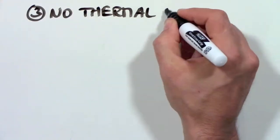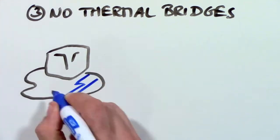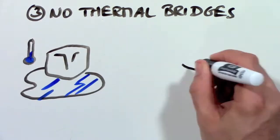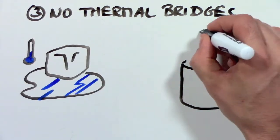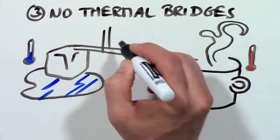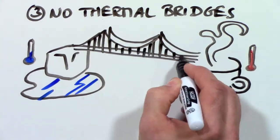3. No thermal bridges. A thermal bridge is like a road for heating energy in which warmth can travel right through your walls. As a matter of fact, most of our houses have thermal highways in our walls where heat can easily travel to the outside.